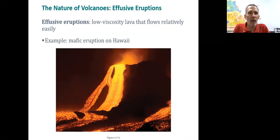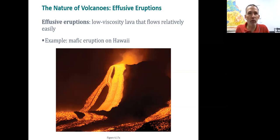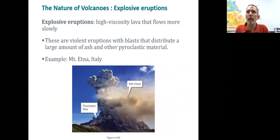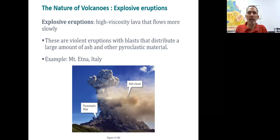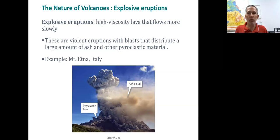Volcanic eruptions can be very fluid, occurring with mafic-rich lava at low viscosity, very runny. Then we have volcanic activity that's much more explosive, where material is blasted out — this is a response to either high amounts of gas or really sticky, high-viscosity lava. A great example would be Mount Etna in Italy, where pyroclastic material is shot out. Mount St. Helens would be another example of very explosive eruptions.